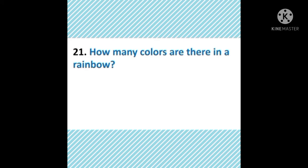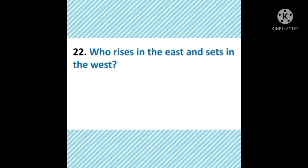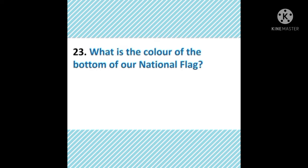Next question: how many colors are there in a rainbow? Rainbow में कितने colors होते हैं? Rainbow में seven colors होते हैं. Next question: who rises in the east and sets in the west? किसका उदय east से होता है and west से डूबता है? Easy answer — the answer is sun. Sun east से rise होता है and west से set होता है। Sunset।